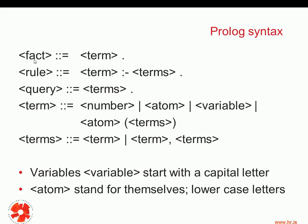The starting symbol here is 'fact'. What is a fact? A fact is a term that ends with a period. Recall that a fact does not have a right-hand side. So a fact is a term. What is a term? A term can be a number, it can be an atom, it can be a variable, or it can be a compound term that consists of an atom and then parentheses open, then you have terms, and then parentheses close.